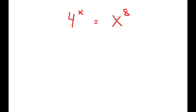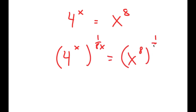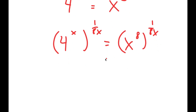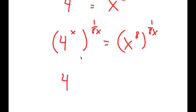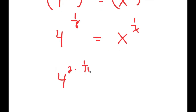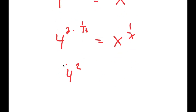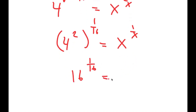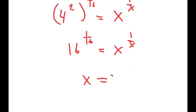In this video, I'm going to solve the equation 4 to the power of x is equal to x to the power of 8. To solve this, I'm going to start by taking the power of 1 over 8x on both sides. I get 4 to the power of 1 over 8 is equal to x to the power of 1 over x, because the 8s cancel out. This is the same as 4 to the power of 2 times 1 over 16, which I can rewrite as 4 squared to the power of 1 over 16 equals x to the power of 1 over x. Since 4 squared is 16, I get 16 to the power of 1 over 16 equals x to the power of 1 over x, meaning x is equal to 16.